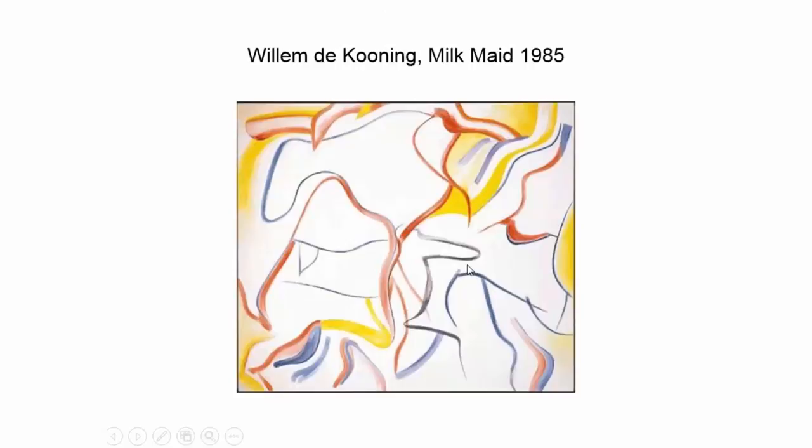His later paintings have been criticised a lot because he had Alzheimer's and was also drinking heavily. He said he started drinking because of anxiety, and someone suggested a little drink — then it started. He was still painting with Alzheimer's, and now dealers want these to be masterpieces so that they can sell them, but the jury is still out on whether they are as powerful as his earlier work.